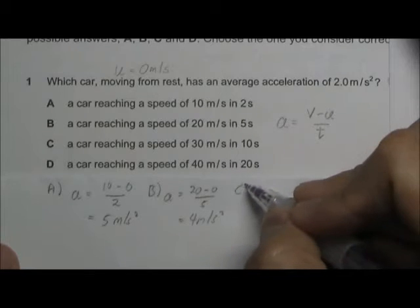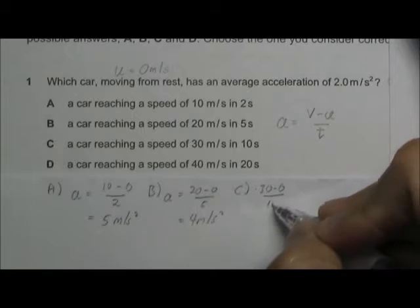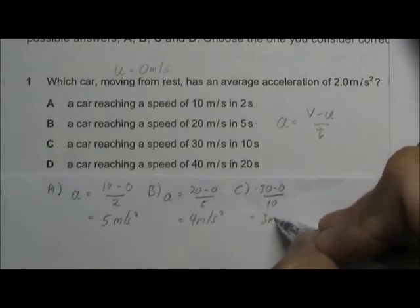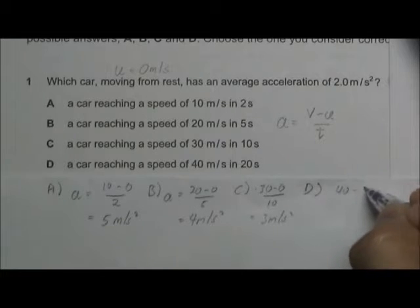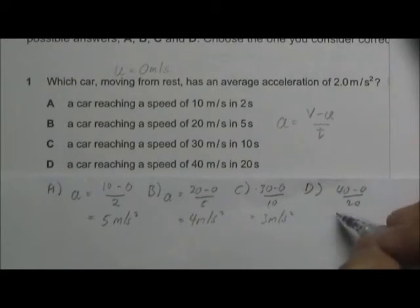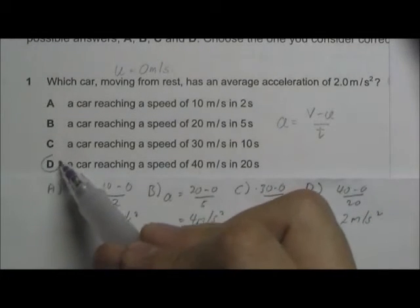Option C: 30 minus zero over 10, this is 3 meters per second squared. And option D, 40 minus zero divided by 20, this will give us 2 meters per second squared. So the answer is D.